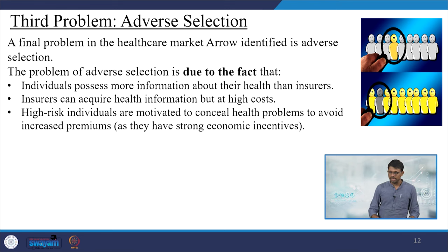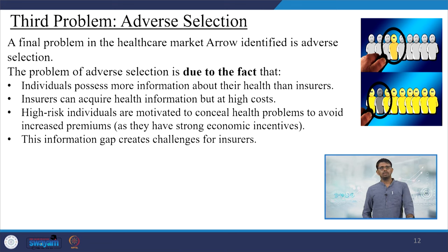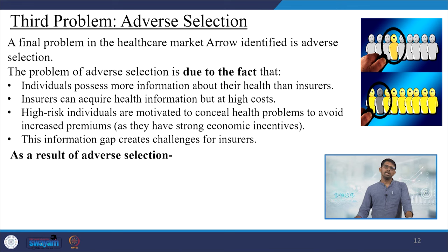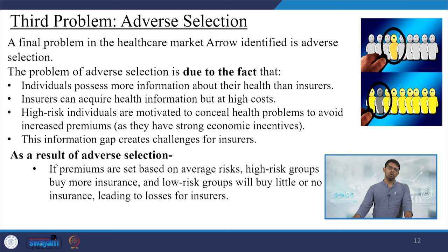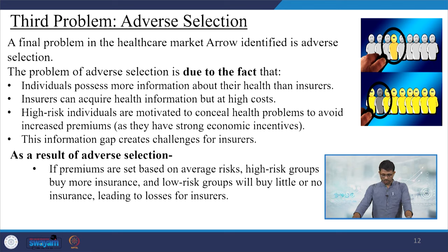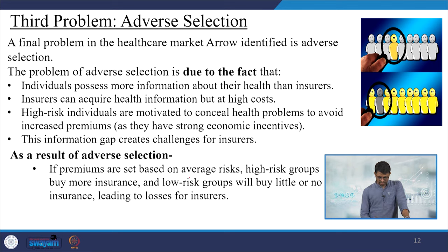In societies like India, low-risk individuals make up a larger percentage of the population, and they hardly opt for purchasing insurance policies. So what really happens? The payment made by low-risk individuals — the options they opt for — is very low. The insurer cannot market the scheme widely. If premiums are set based on average risk, high-risk groups buy more insurance and low-risk groups buy little or no insurance, leading to losses for the insurers.